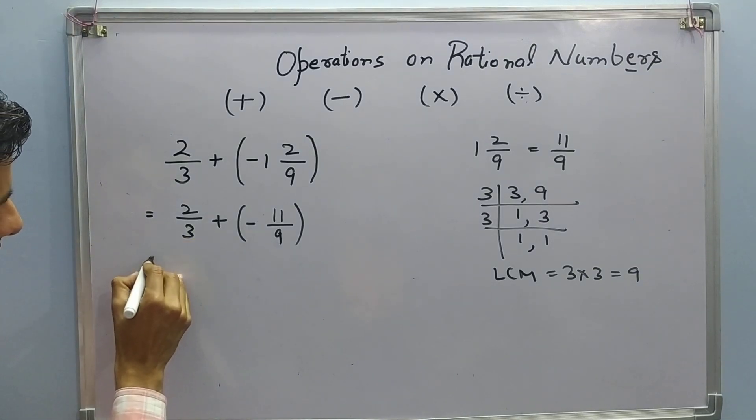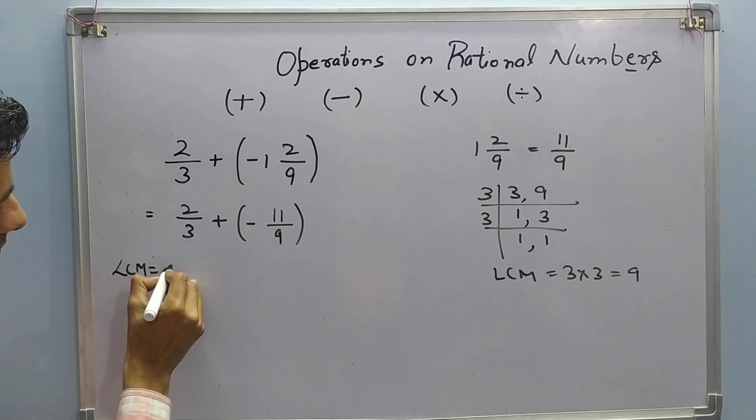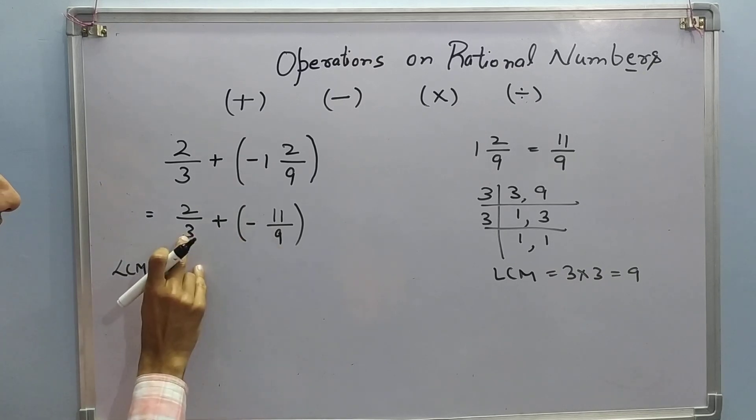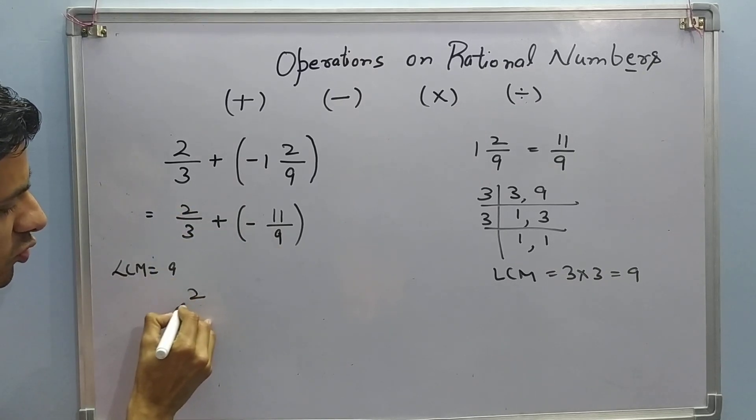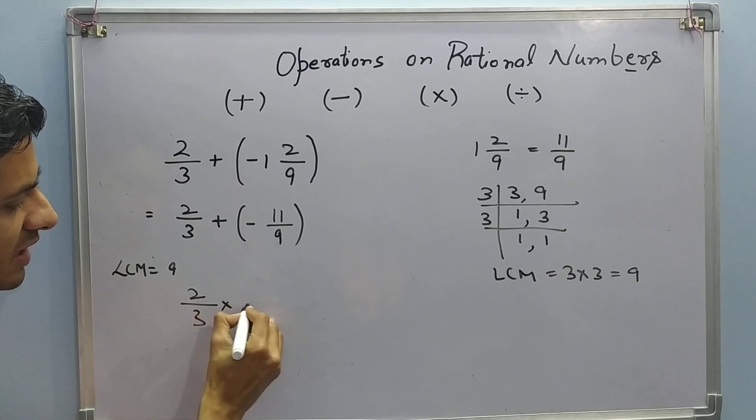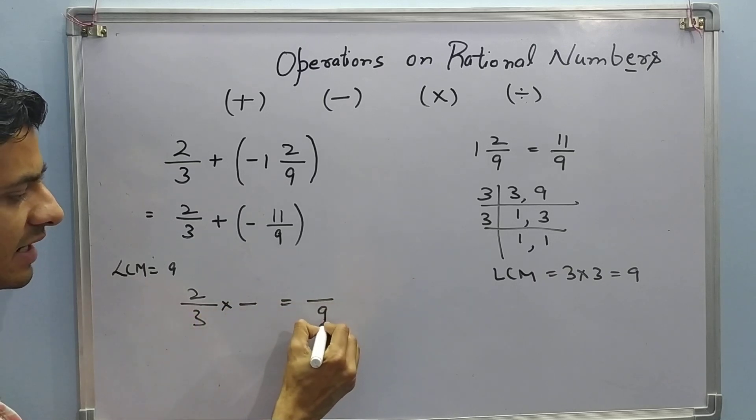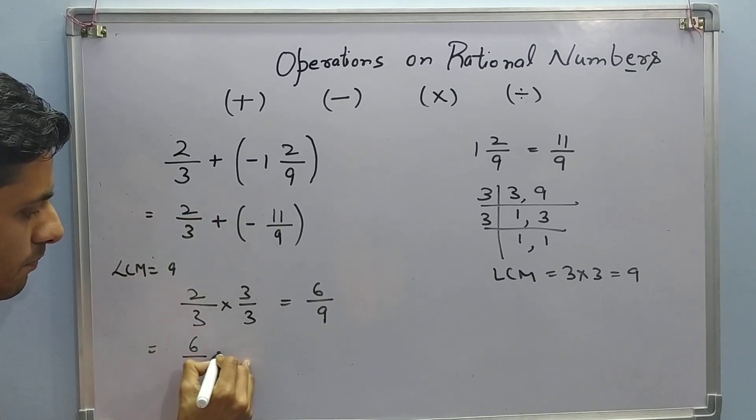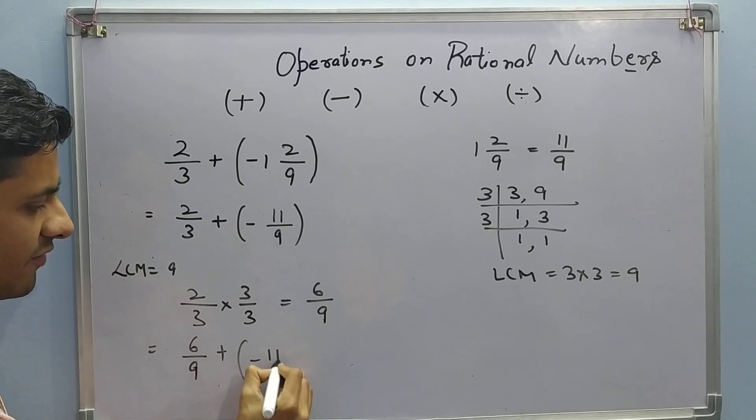Now let us make both the denominators equal to 9. Here it is already 9. Let us make this 2 upon 3 also equal to 9. 2 upon 3 multiplied by some number to make it 9. Let us multiply it by 3. So 3 2s are 6. So it can be written as 6 upon 9 plus negative 11 upon 9.